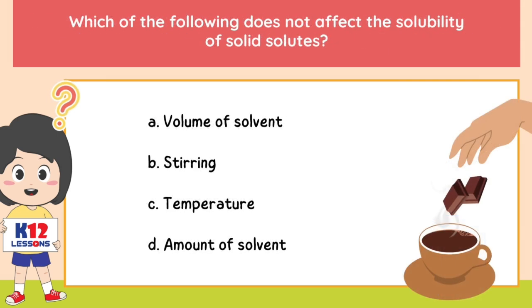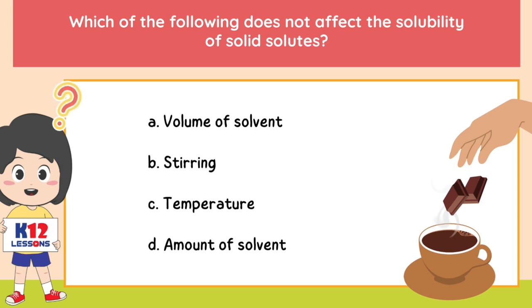Which of the following does not affect the solubility of solid solutes? A. Volume of solvent. B. Stirring. C. Temperature. D. Amount of solvent.